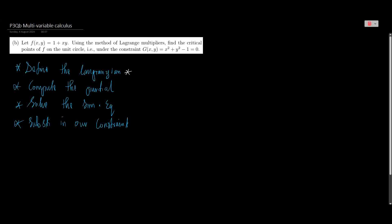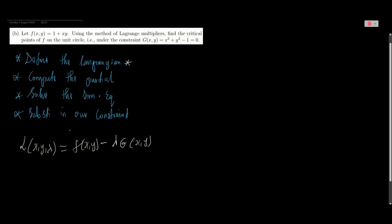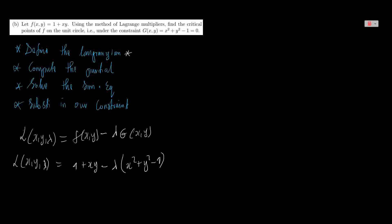We have to define our Lagrangian — there is a formula you have to know. The Lagrangian L(x, y, λ) = f(x, y) − λ · g(x, y). Simply substituting our given equations, the Lagrangian becomes L(x, y, λ) = 1 + xy − λ(x² + y² − 1). That is our Lagrangian.